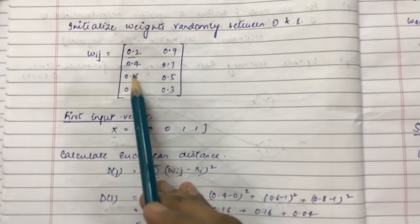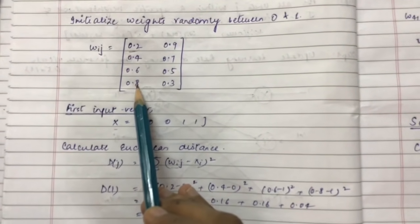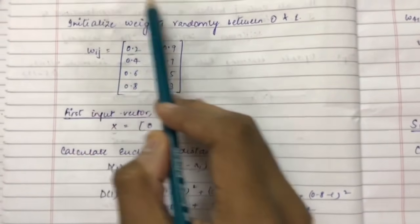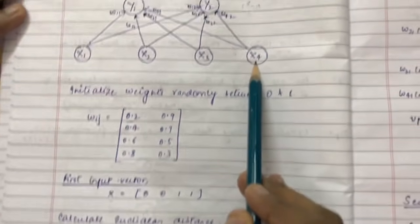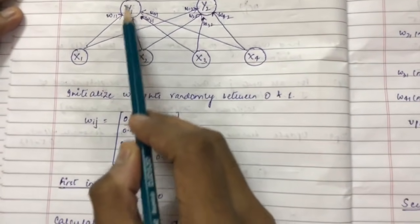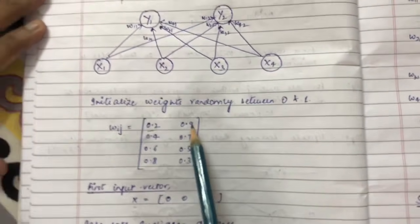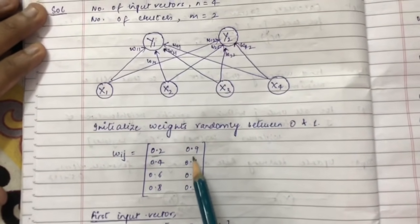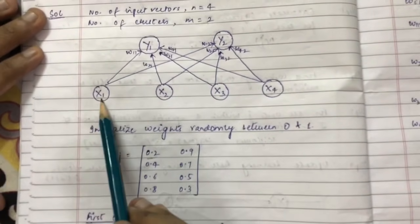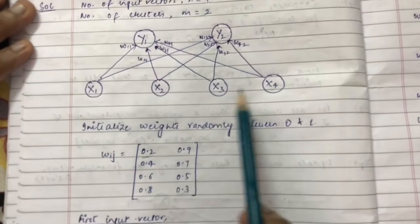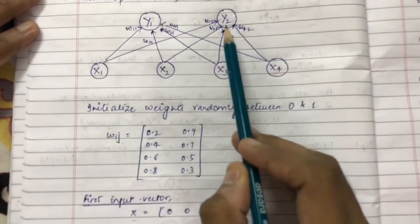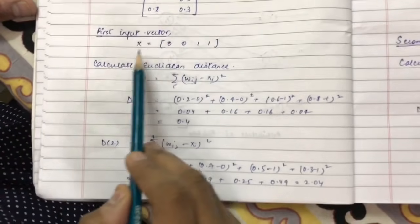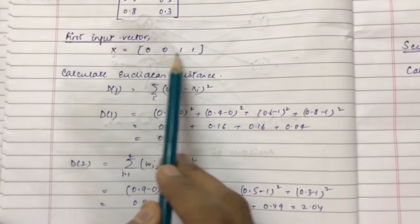The first step is to initialize the weights randomly between 0 and 1. The values 0.2, 0.4, 0.6, 0.8 represent the weights with which x1, x2, x3, x4 are connected with cluster y1. The values 0.9, 0.7, 0.5, 0.3 represent the weights with which x1, x2, x3, x4 are connected with cluster y2.